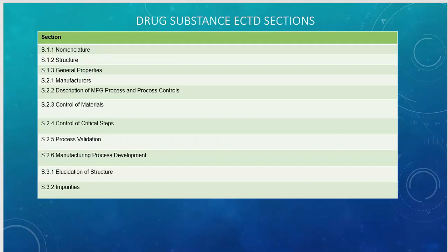Moving on to Module 3 — it covers drug substance and drug product and includes a lot of detail about your manufacturer, nomenclature, structure, and properties. In the nomenclature section you describe your laboratory code, USAN if allocated, and INN name. In the structure section you list the physical and chemical structure and draw a 3D diagram. In general properties, you list solubility profile, pH, pKa, extinction coefficient depending on the product — whether it's a small molecule or biologic — potency, and other biological activity. Manufacturers lists all your testing labs and manufacturers.